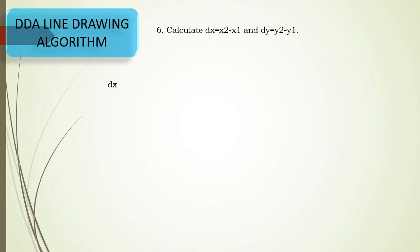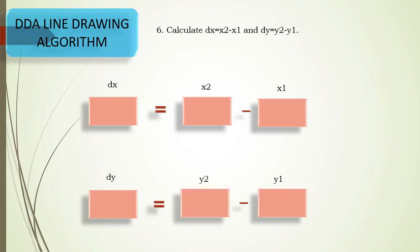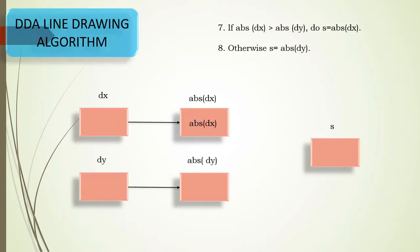We then calculate the differential of x and differential of y. dx is obtained as x2 minus x1, and dy is obtained as y2 minus y1. We fetch all values from our frame buffer to compute these differentials. After that, we find the absolute values of dx and dy to determine the number of steps.